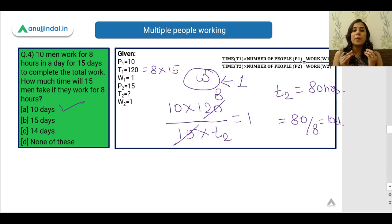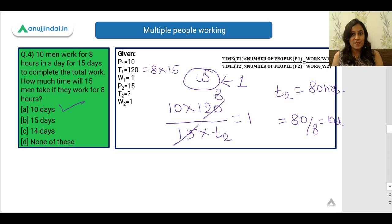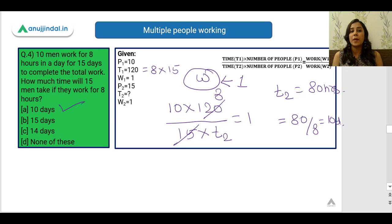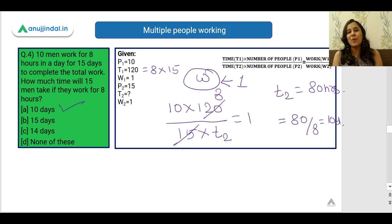These kinds of problems are straightforward. Just remember the formula — it's easy to recall — and substitute the given values to find the unknown. In this video we covered how to solve problems with multiple laborers working together, using the key concept that if N people do a task in X days, one person takes N × X days. I hope you liked the video. Watch our coming videos for the next concepts. Thank you.